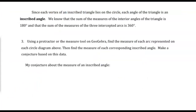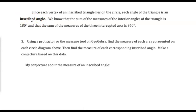Since each vertex of an inscribed triangle lies on the circle, each angle of the triangle is an inscribed angle — that's a vocabulary word you'll want to capture. An inscribed angle inside a circle has its vertex on the circle, and the segments that make up the sides are chords of the circle. We know the sum of the interior angles of a triangle is 180 degrees and the sum of the three intercepted arcs is 360 degrees. Using a protractor or the measure tool on GeoGebra, find the measure of each arc and each corresponding inscribed angle, then make a conjecture.